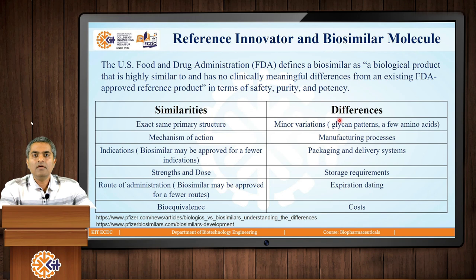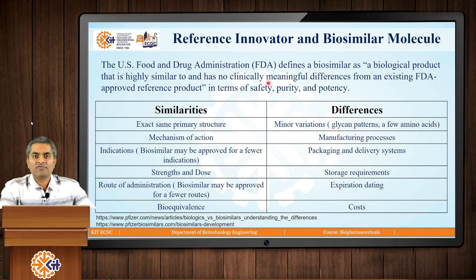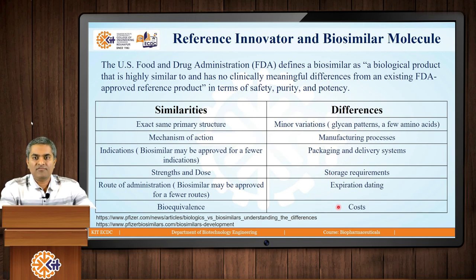But when we say that reference innovator and biosimilar molecules are similar, they are not the same. The first and foremost difference is there are minor variations structurally, like glycan patterns or a few amino acids. The manufacturing process of the reference innovator company and biosimilar manufacturing company would be different. The packaging and delivery systems, storage requirements, expiration dating, and cost also could be different between the innovator reference and the biosimilar molecule.